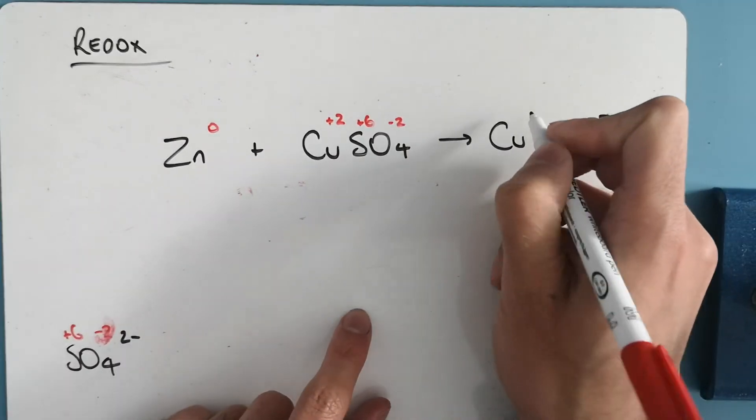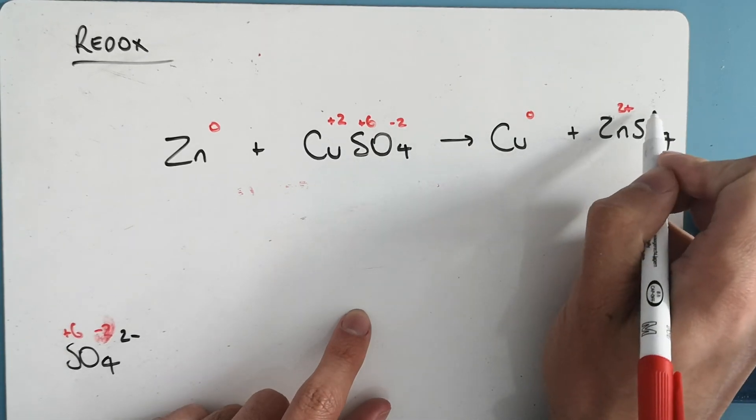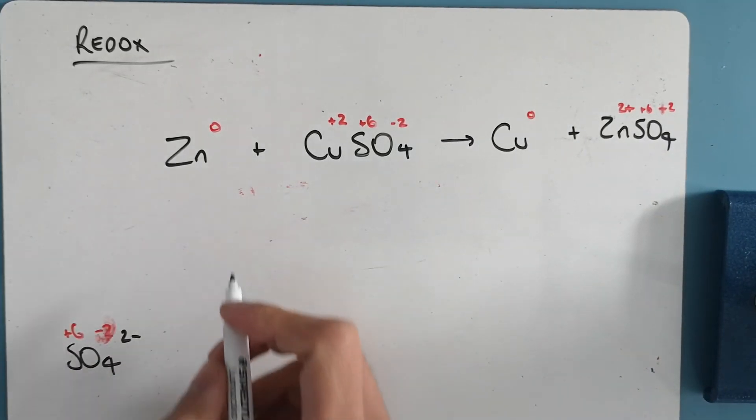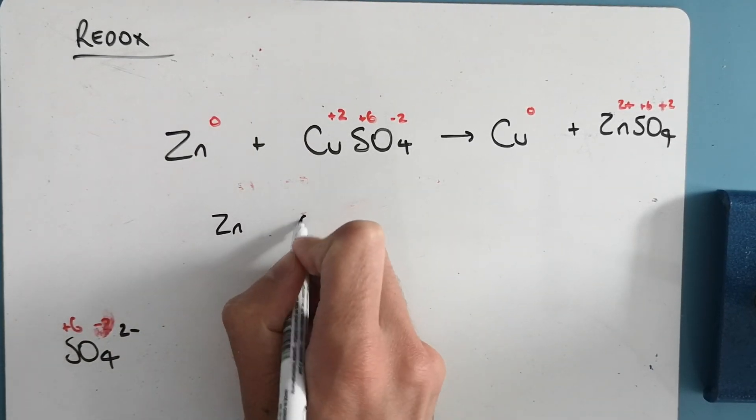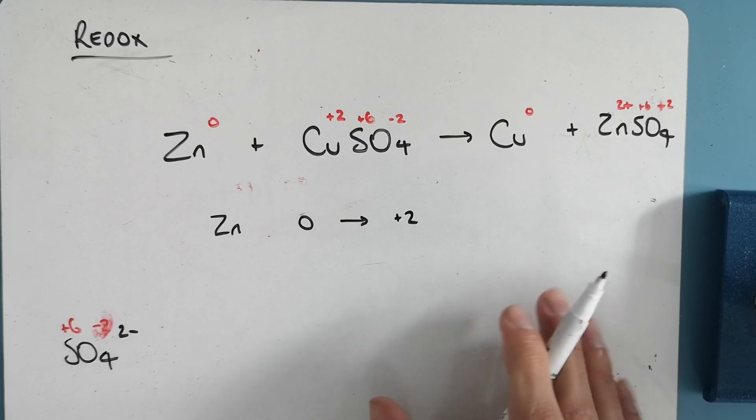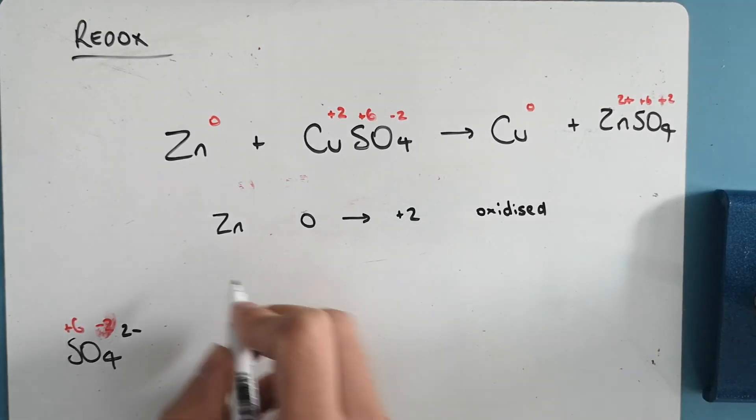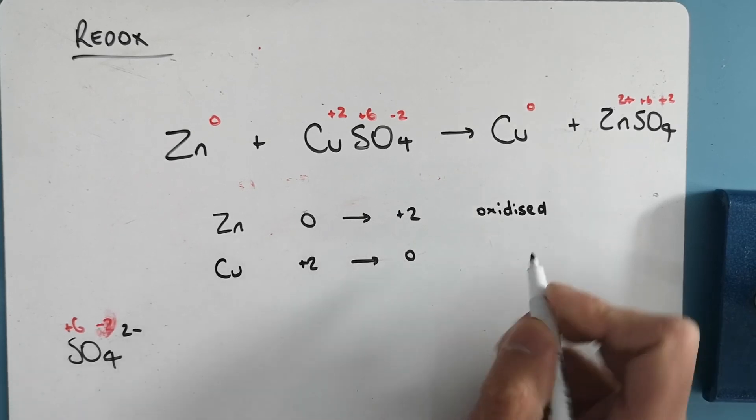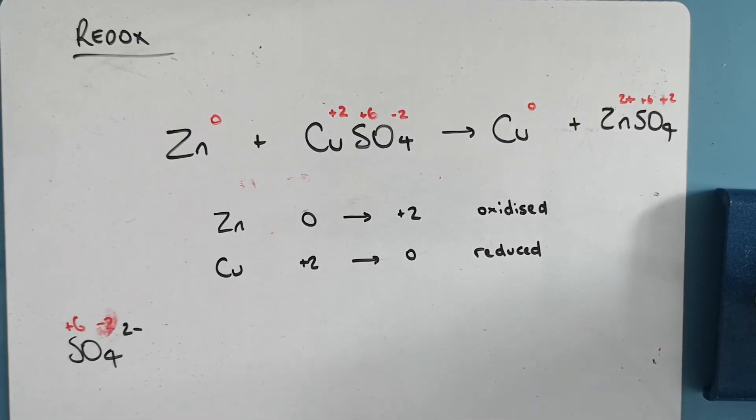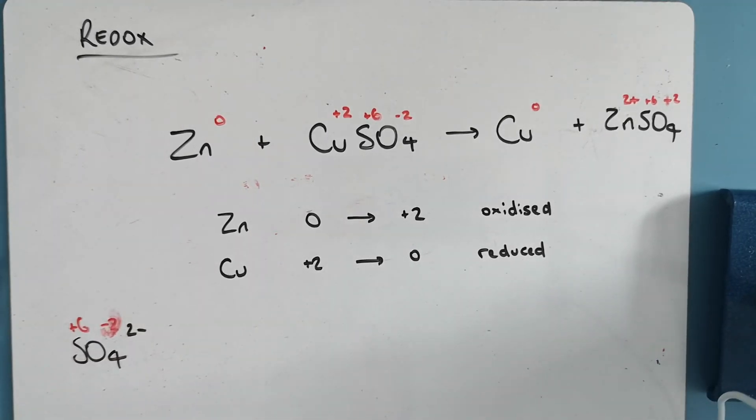Put all the oxidation states in. Here copper on its own, so it's zero with no charge. Zinc over here has now swapped to become two plus. The sulfate is still plus six, and the oxygen still minus two. So zinc has gone from zero to plus two. If it's got more positive, it must have lost electrons, and oxidation is loss. So it has become oxidized. Copper has gone from plus two to zero, so it must have been reduced, because it's got more negative. It's moved towards the negative side. It's gained two electrons. And that is a brief bit of redox.